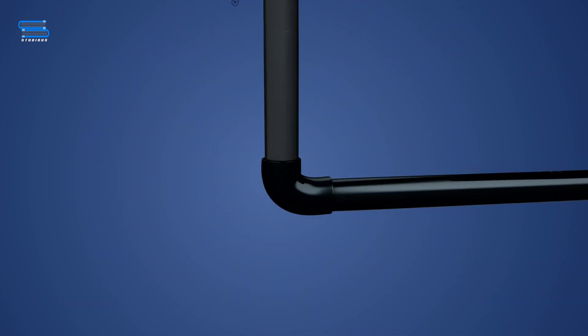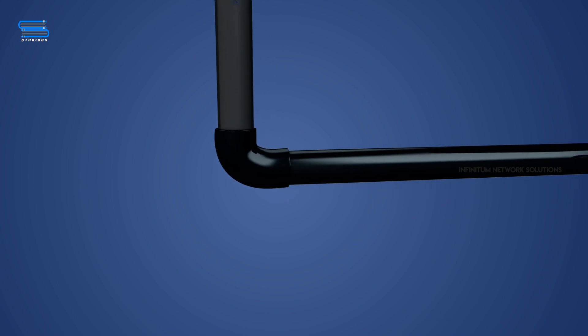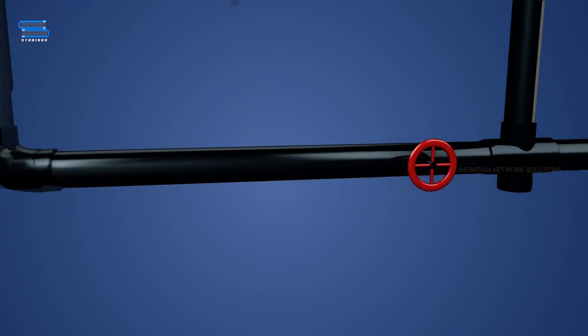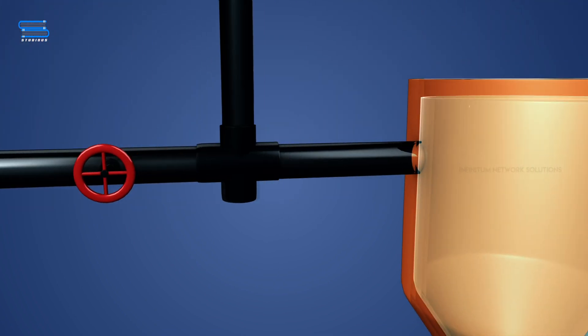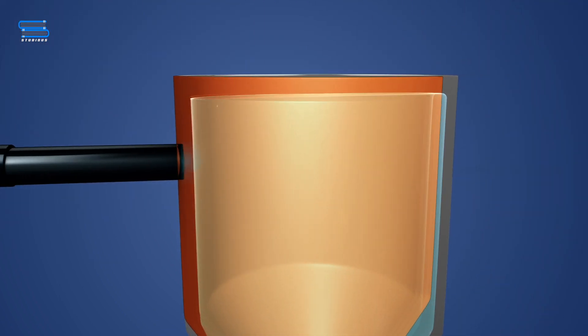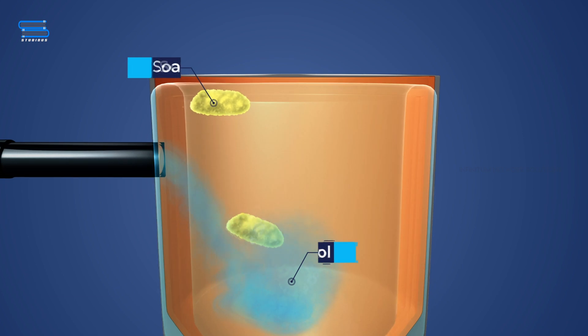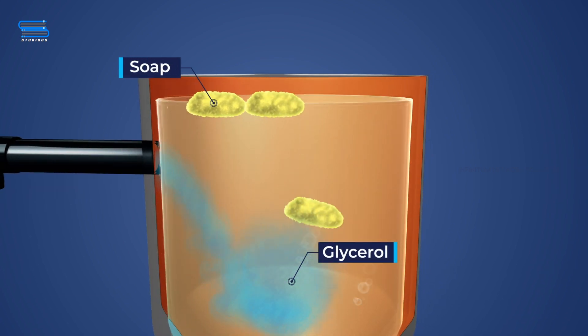The soap floats on the surface of the aqueous solution, whereas glycerol passes into the solution, dissolving in water.